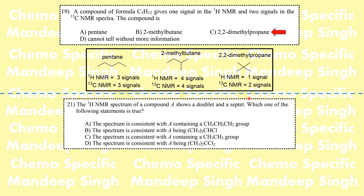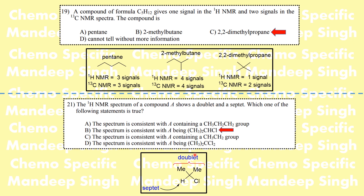The next problem states that the 1H NMR of a compound shows a doublet and a septet — we are talking about an isopropyl group, and the answer is option B. For this isopropyl group, the central CH hydrogen gives a septet, and the two methyl groups give a doublet. It is a pretty straightforward answer. Learning NMR is all about practice, and in TIFR a lot of questions are based on NMR.